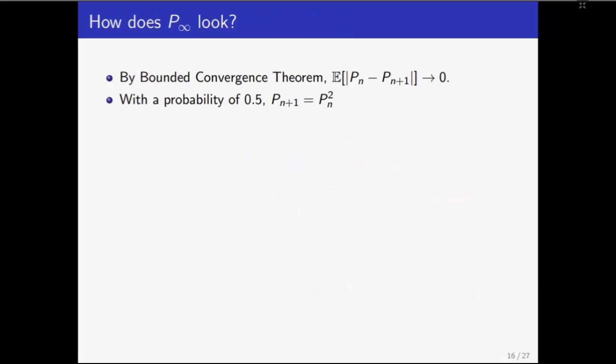As always, martingale convergence theorem doesn't tell us how P infinity looks. So let's try to compute that now. Notice that Pn minus Pn plus 1 converges to 0 almost surely. And since they are bounded random variables by bounded convergence theorem, the expectation of their difference also converges to 0. Also recall that with probability of half, Pn plus 1 equals Pn square. Using this, we can lower bound the expectation of their difference by half times the expectation of Pn minus Pn square. Factoring this term, it is equal to Pn into 1 minus Pn. This is clearly a non-negative quantity and is upper bounded by a quantity which converges to 0. Therefore, even this converges to 0.